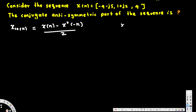For the symmetric (conjugate even) part, you use: x(n) plus x-conjugate of negative n, divided by 2. So for odd/antisymmetric, put a negative sign; for symmetric/even, put a positive sign. Since we want antisymmetric, we'll use the equation with the minus sign.